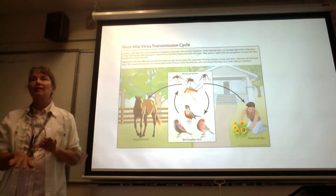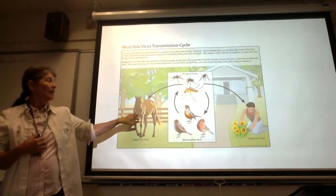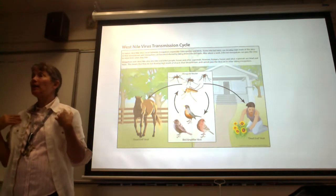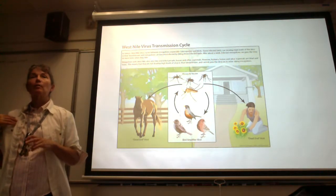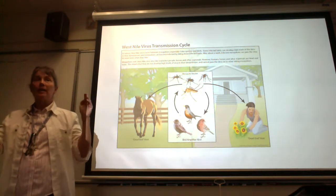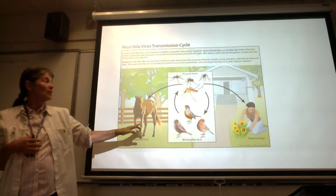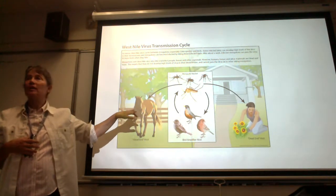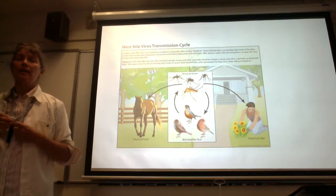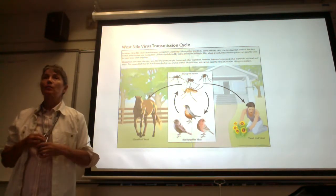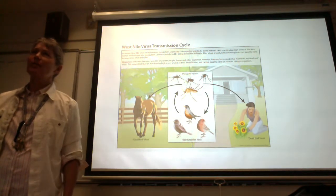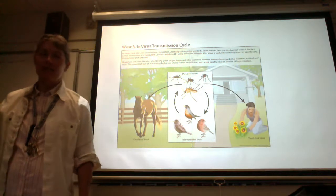Humans and horses are dead-end hosts - the pathogen isn't going anywhere once it gets into a horse or human. But in horses it can cause really serious neurological disease, and in some humans too. They have a vaccine for horses to protect against West Nile virus, but we don't have one for humans. Also, can you name a parasitic helminth vectored by mosquitoes? The Wuchereria - lymphatic filariasis. Remember, there are even parasitic worms transmitted by mosquitoes.